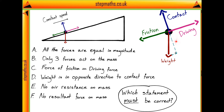Since those two are equal, the weight cannot be equal to the contact force, since the perpendicular component of weight is going to be smaller than the full weight. So statement A is false. It's also worth noting that we could compare forces parallel to the surface: the driving force must equal the parallel component of weight plus friction, since the ball moves at constant speed and the resultant force in this direction must be zero. Therefore the driving force is not equal to either friction or weight alone.